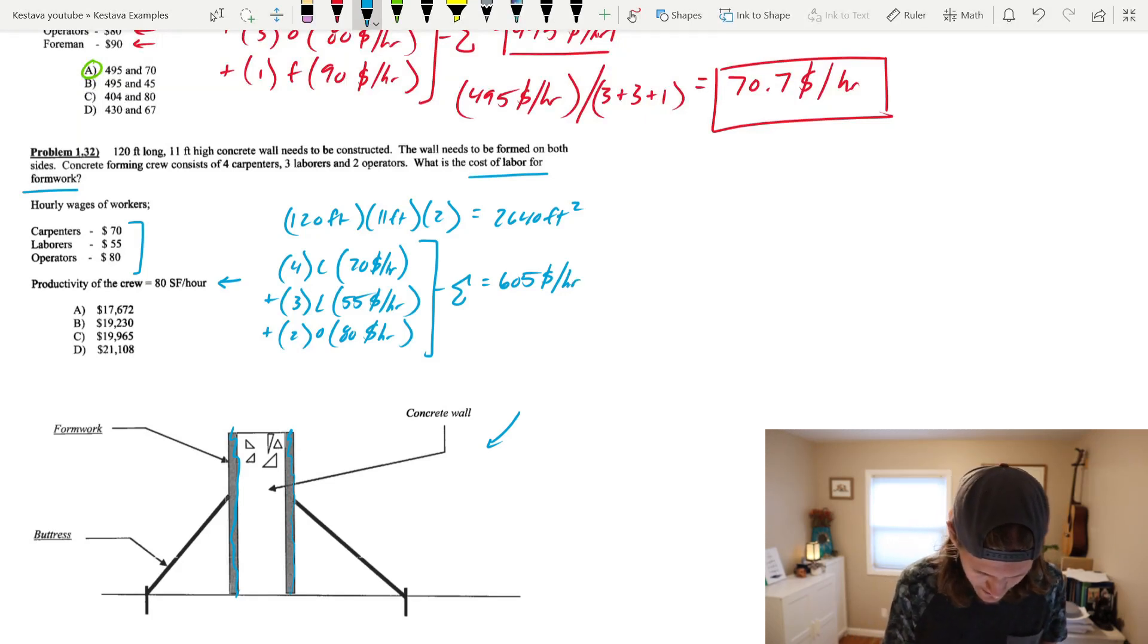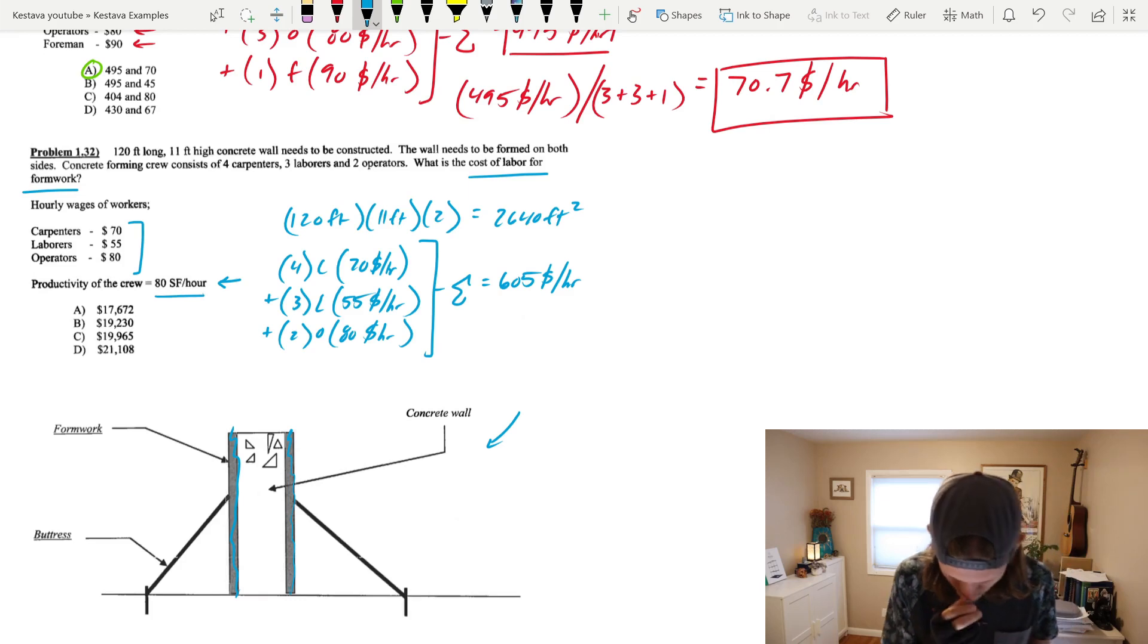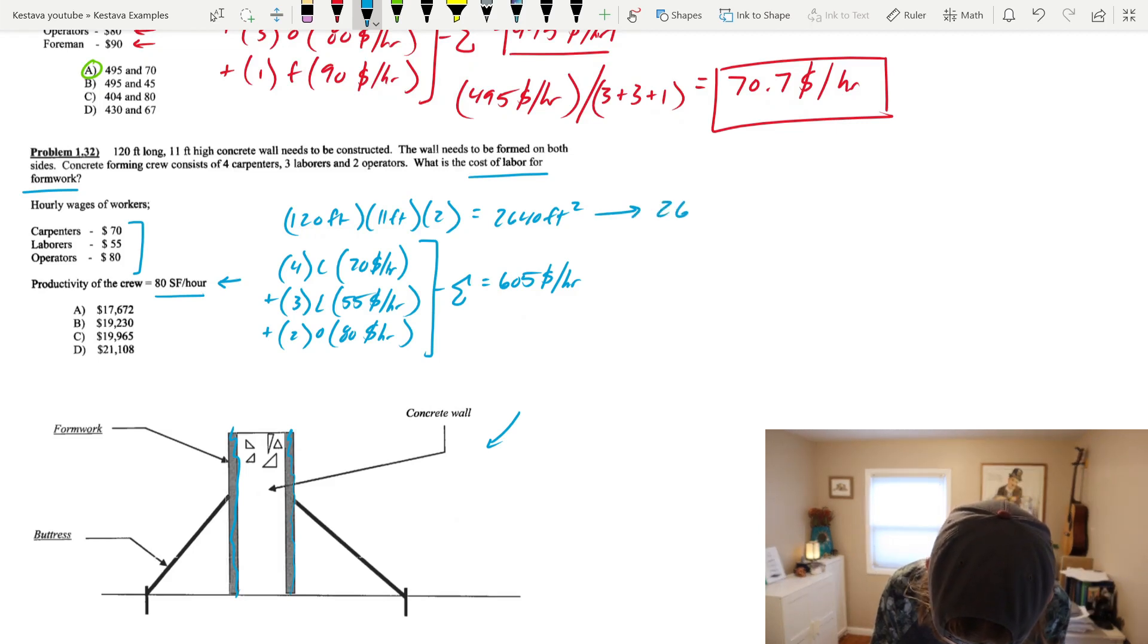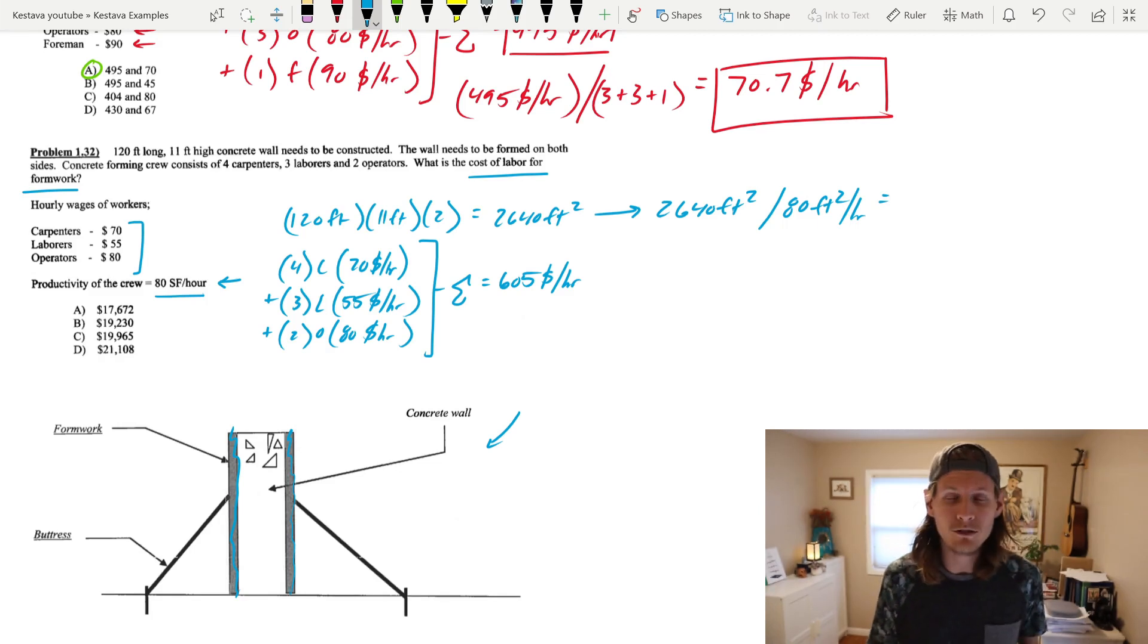The next thing we're going to need is this bit of information, the productivity of the crew. Now, the crew can construct 80 square feet of wall per hour. We have 2,640 square feet of wall. So if we take the total amount of wall that needs to be constructed, divide that by 80 square feet per hour, that'll get us a total amount of hours that it will take this crew to construct this wall. That equals 33 hours to complete this formwork.